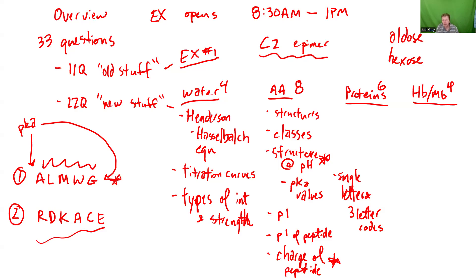When it comes to asking about structures and classes, I'm more likely to ask about ionizable amino acids — polar positive or polar negative — because they're going to be involved in ionic interactions.